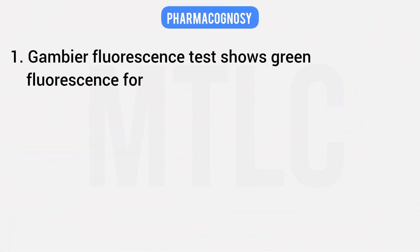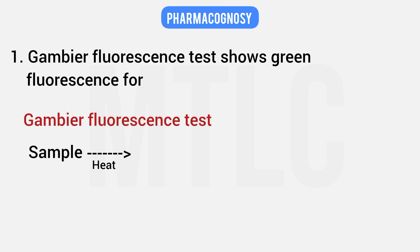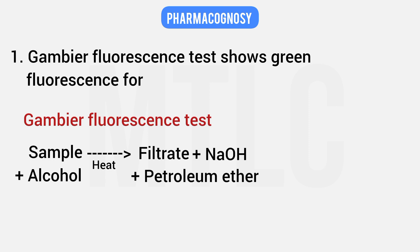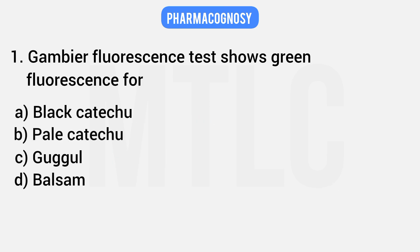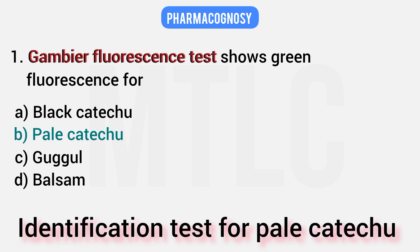First question: the Gambia Fluorescent Test shows green fluorescence. The Gambia Fluorescent Test is performed by boiling with alcohol, filtering, and adding sodium hydroxide — this produces green fluorescence. This test applies only for pale catechu, not for black catechu.